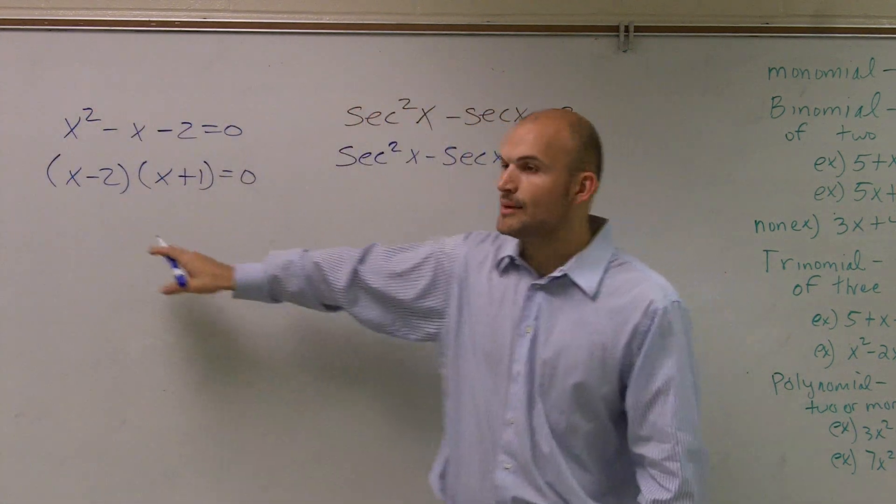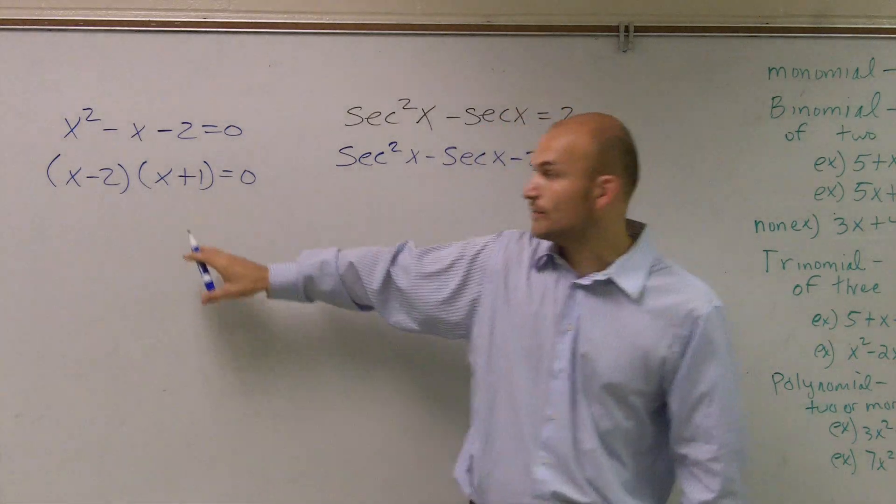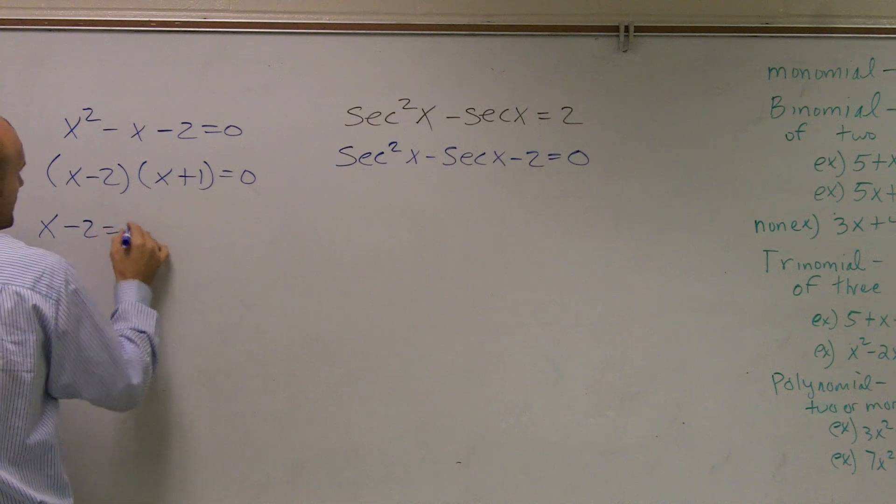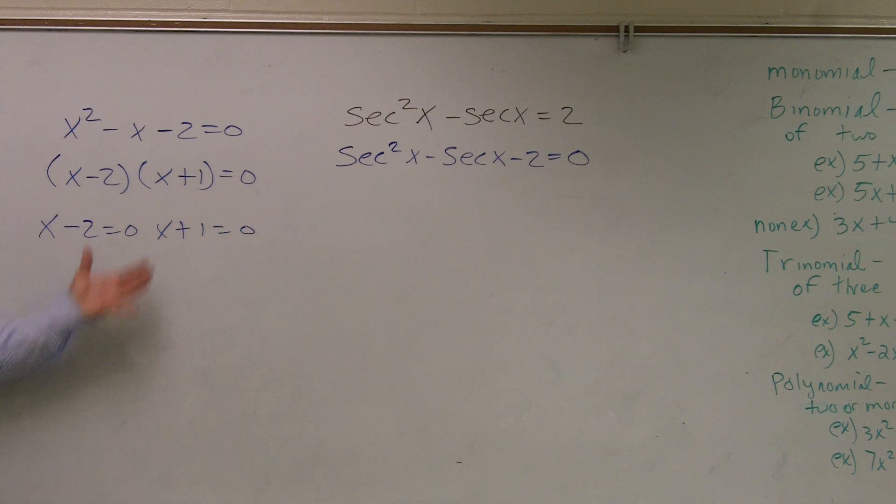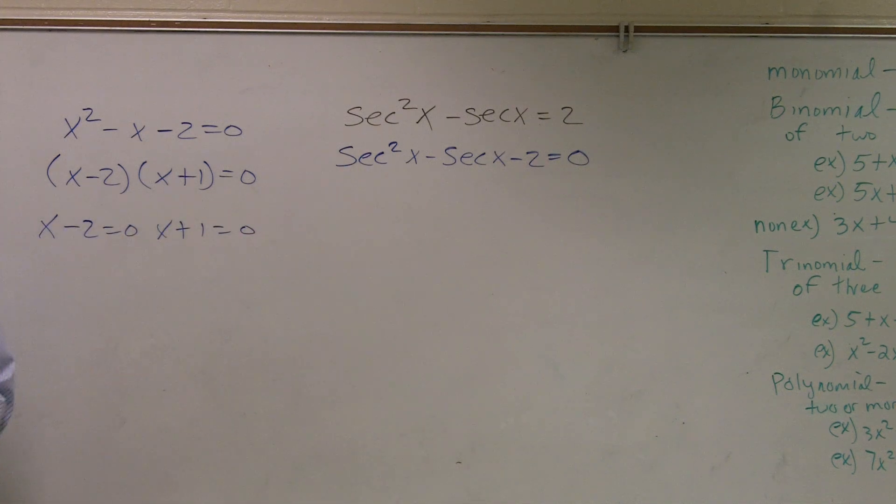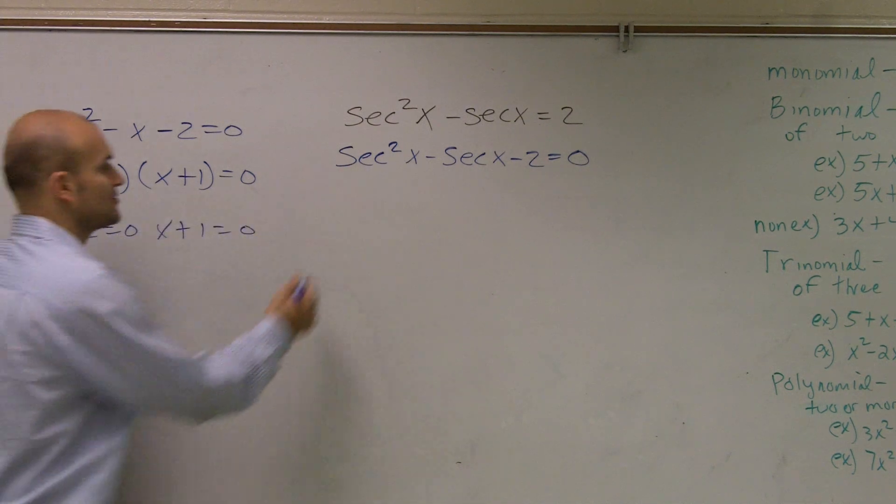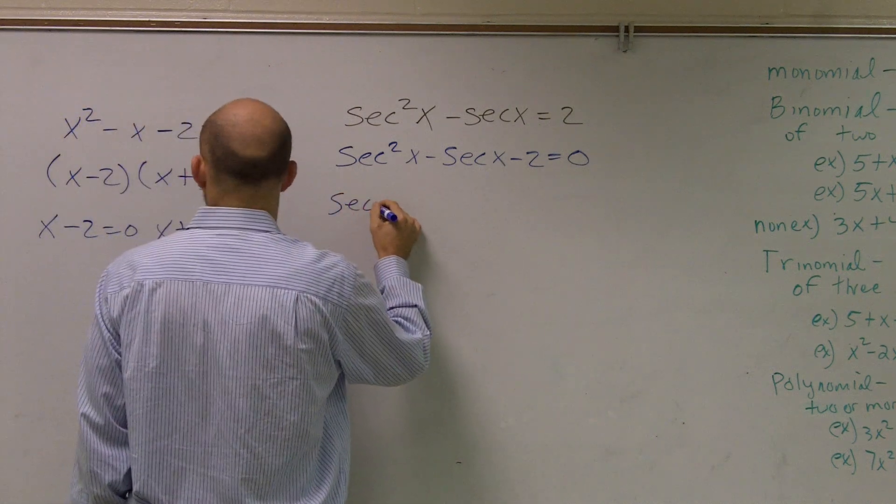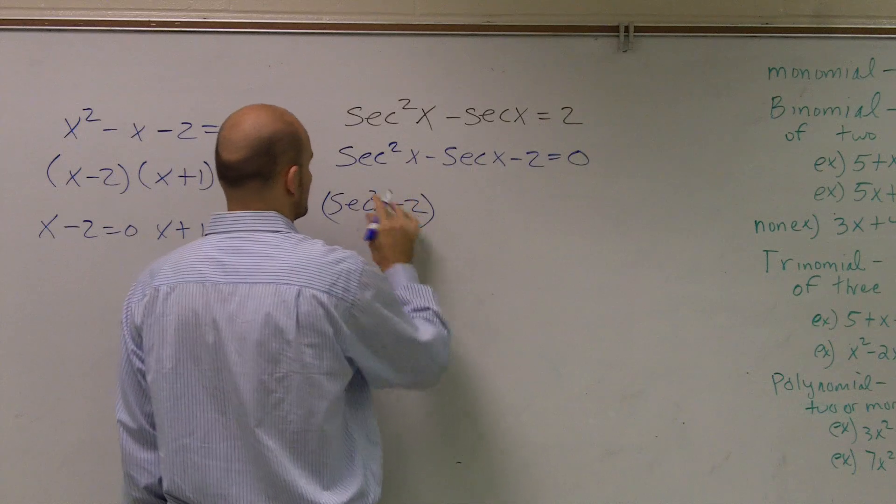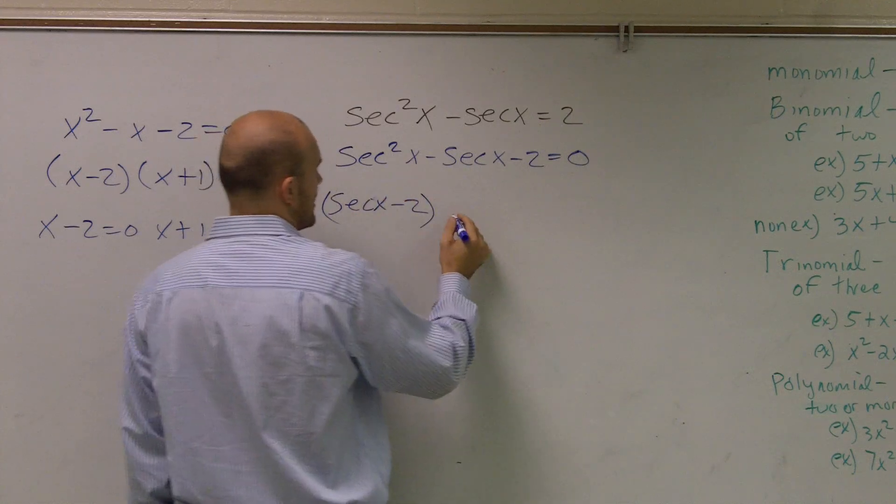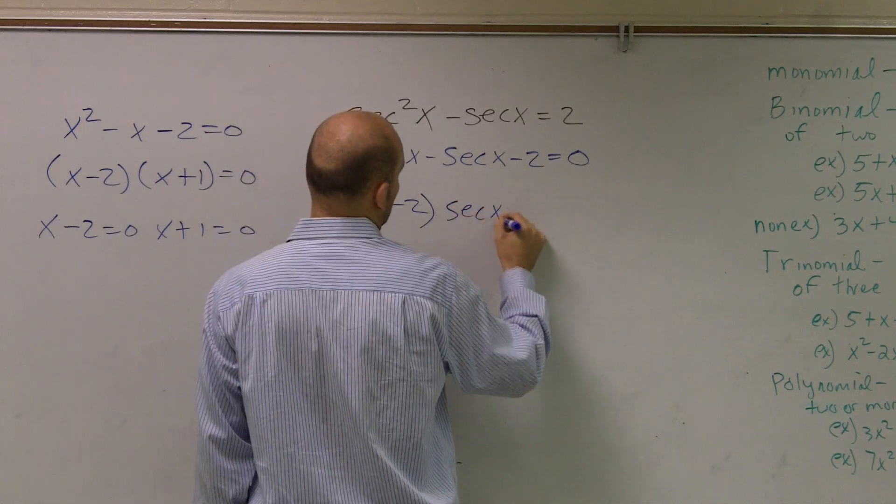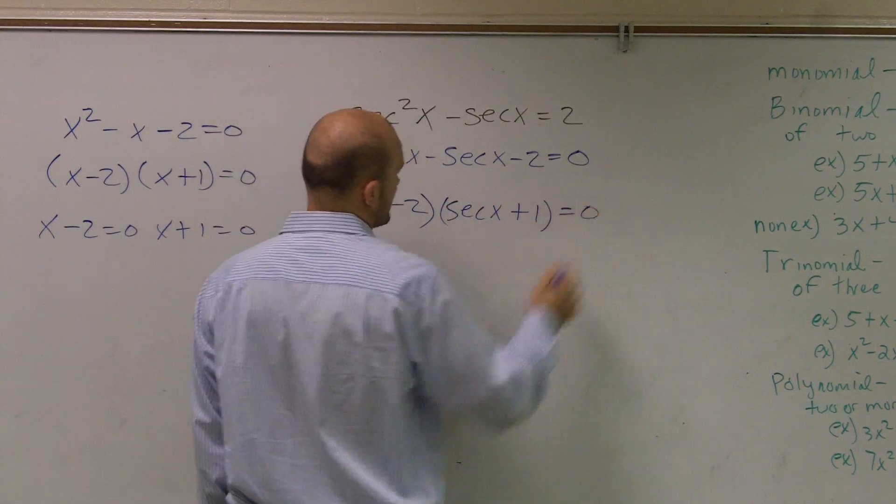And the next thing is remember, you've got to remember the zero product property. When we have these two multiplied equals 0, we can set both of these equal to 0. This is what we've done before with older algebra. Now all we're doing is we're going to do the exact same thing with the trig. So what I notice is I can now factor this to secant of x minus 2 and secant of x plus 1 equals 0.